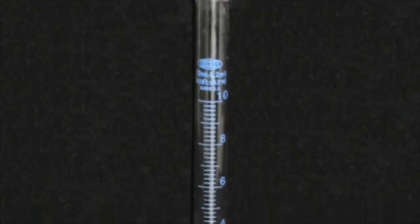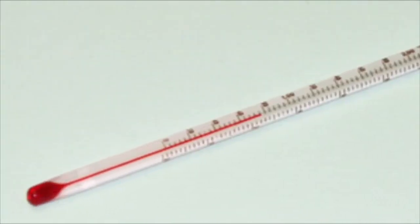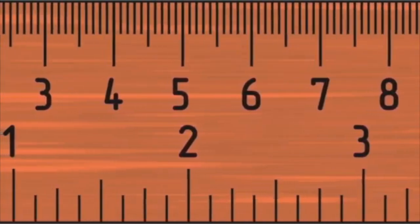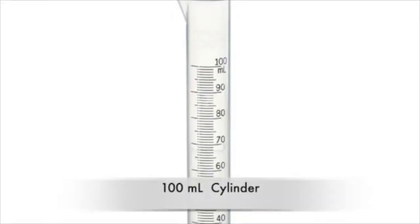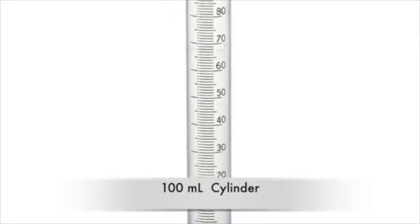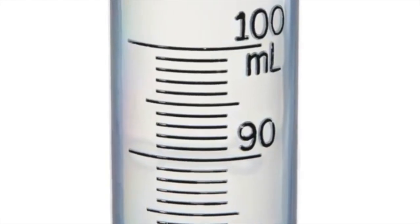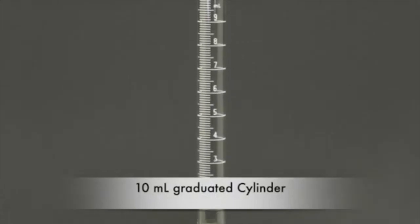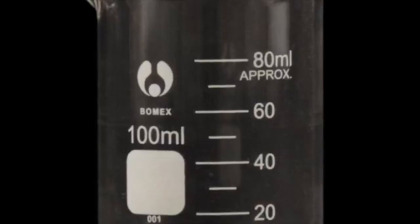You'll then inspect the following measuring devices in order to determine the number of significant figures that should be used for measurements. The measuring devices are a loader, a 100 milliliter graduated cylinder, a 10 milliliter graduated cylinder, and a 100 milliliter beaker.